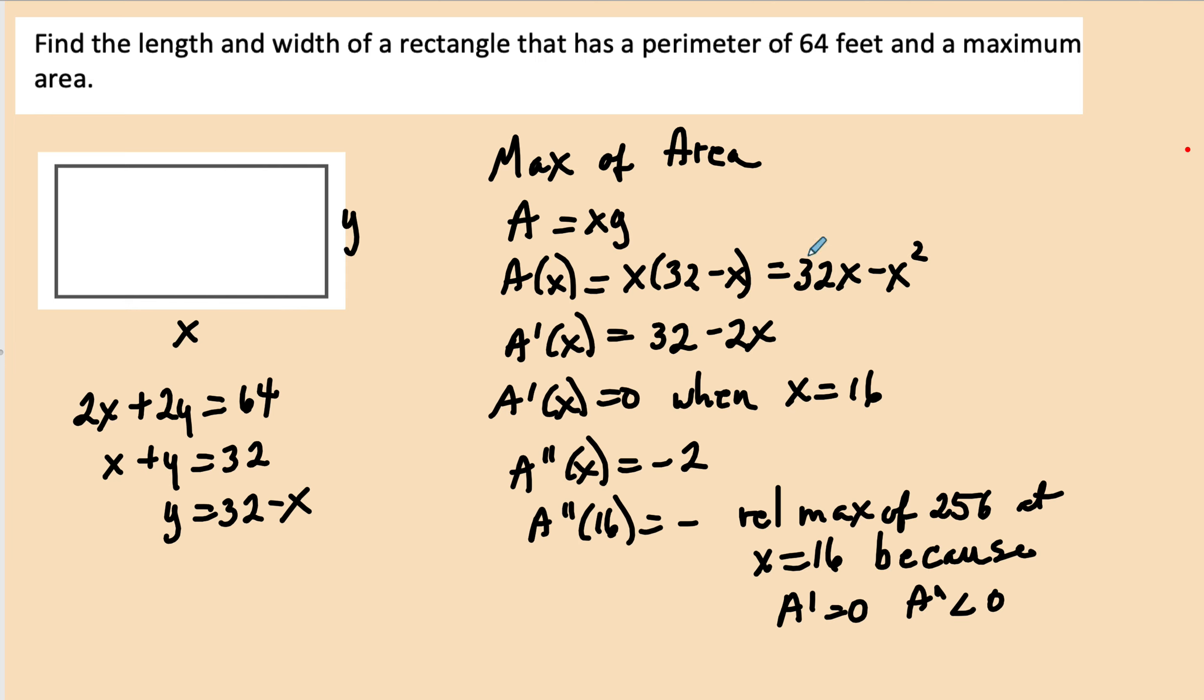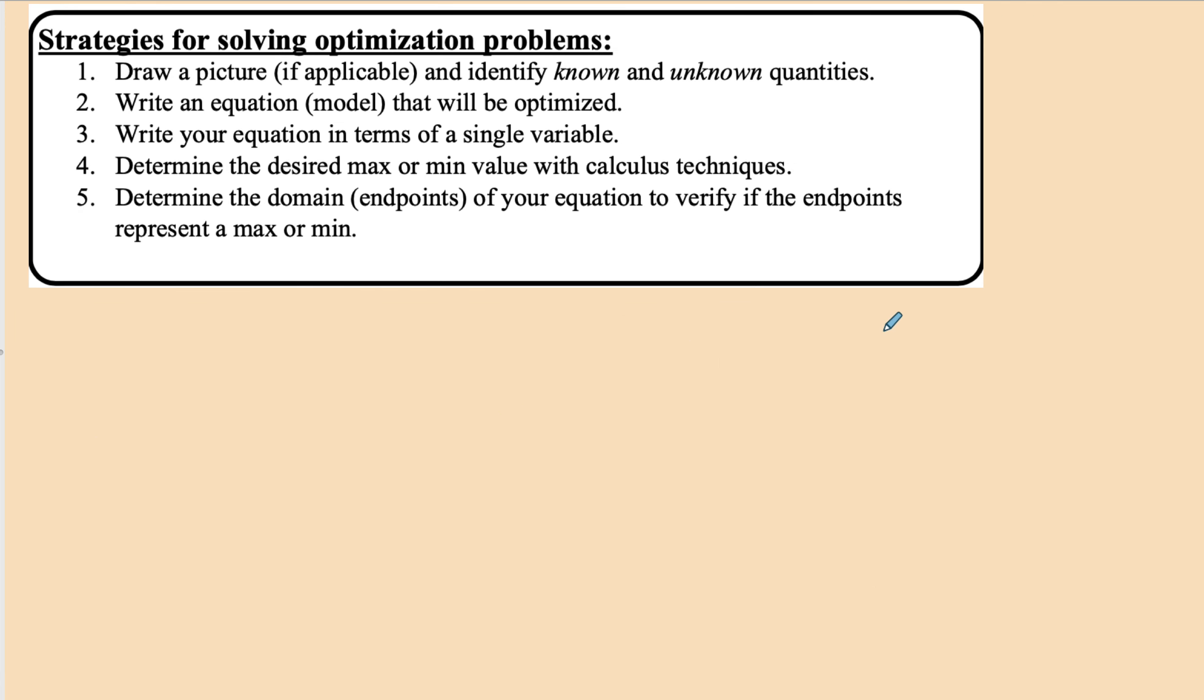And I can see I figured out my critical point, which is at 16. I evaluated my critical point at the second derivative, found that it was negative, substituted the 16 back into my area formula to get my relative max, located at 16, and my justification. And remember that these are the steps that we follow to do the problem.